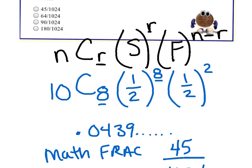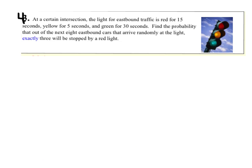We've got just one more. And take your time, read it, try it on your own, and see if we get the same answer here. At a certain intersection, the light for the eastbound traffic is red for 15 seconds, yellow for 5, green for 30. Find the probability that out of the next 8 eastbound cars that arrive randomly at the light, exactly 3 will be stopped by a red light.